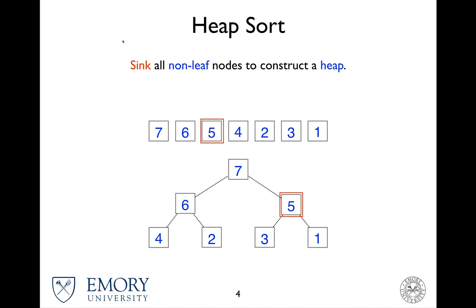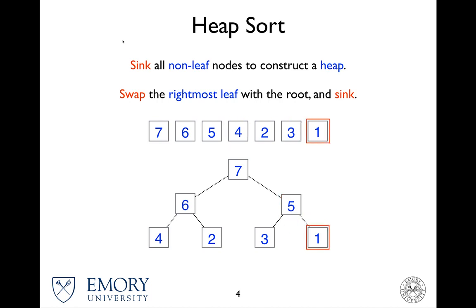So now we can actually start doing the sorting. The next step is to swap the rightmost leaf with the root node, and sink. Once the rightmost leaf is swapped, we consider it invisible from the heap. So given the rightmost leaf — right now it's 1 — we do the swap with the root node. And now the rightmost leaf, we consider this invisible.